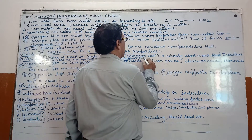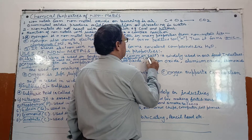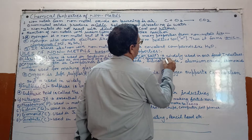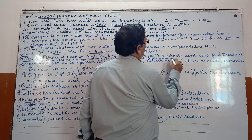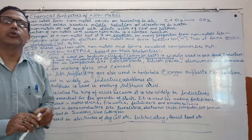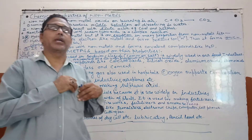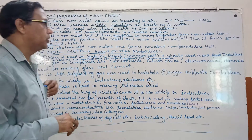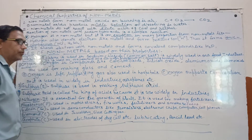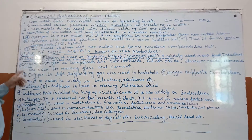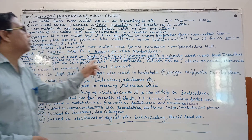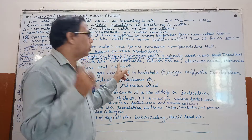Bleaching powder is a very important compound used to bleach and to clean. Oxygen is also used in the body and has important uses.